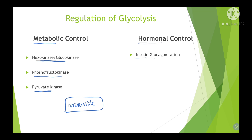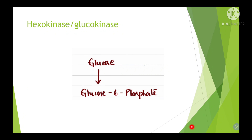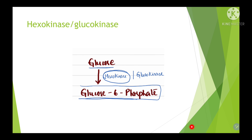For hormonal control, insulin and glucagon are the main hormones that regulate glycolysis. The first irreversible reaction is the phosphorylation of glucose to glucose-6-phosphate by the enzyme hexokinase or glucokinase. Hexokinase is inhibited by feedback inhibition by its product glucose-6-phosphate — whenever glucose-6-phosphate accumulates, it inhibits hexokinase. Whereas glucokinase is inhibited by hormonal control, specifically by insulin.